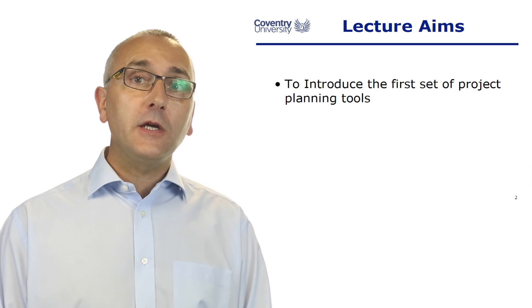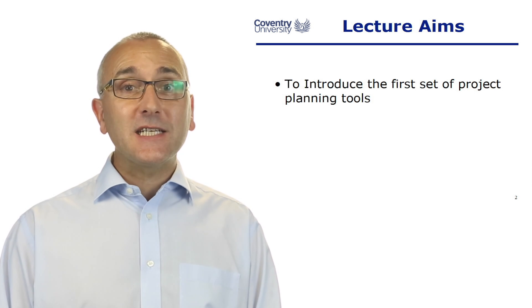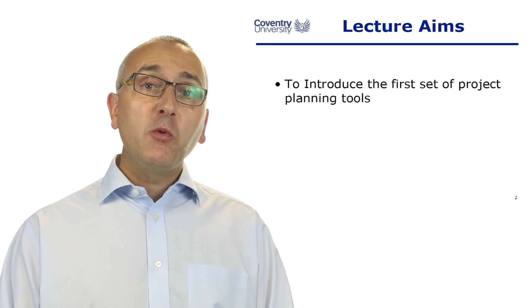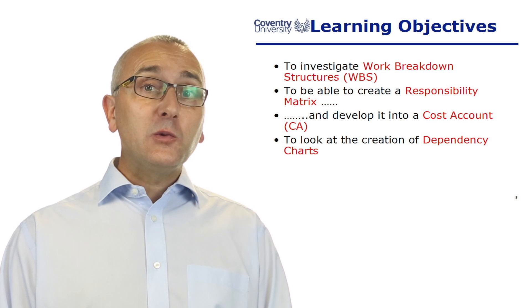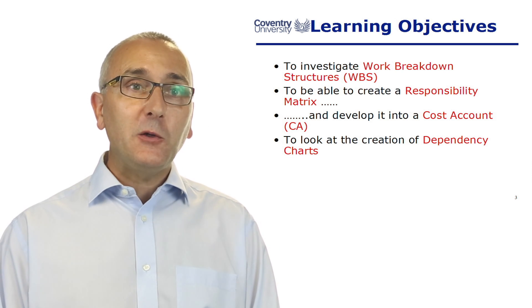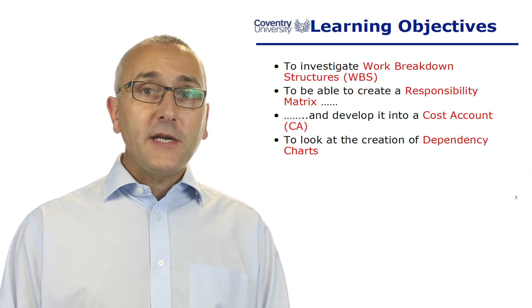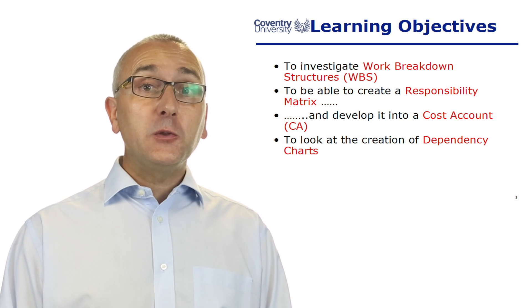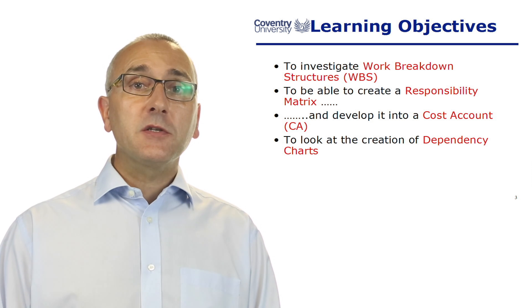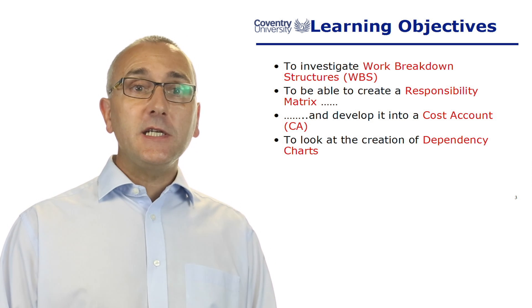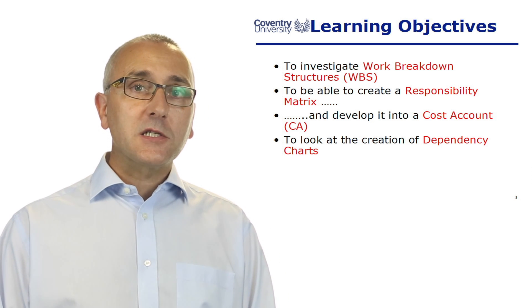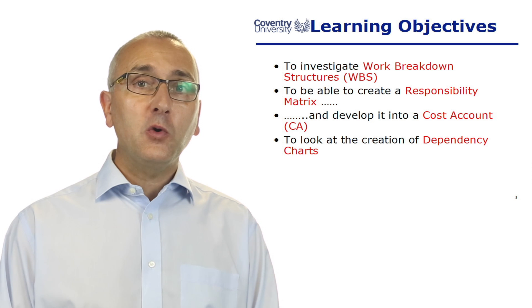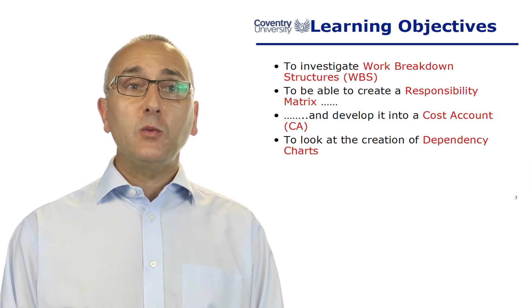The aims of lecture three are to look at the first set of project planning tools; we'll be looking at a second set in lecture six. The four planning tools we're going to investigate as part of project planning one are: work breakdown structures, often referred to as WBS; responsibility matrices; cost accounts; and dependency charts.